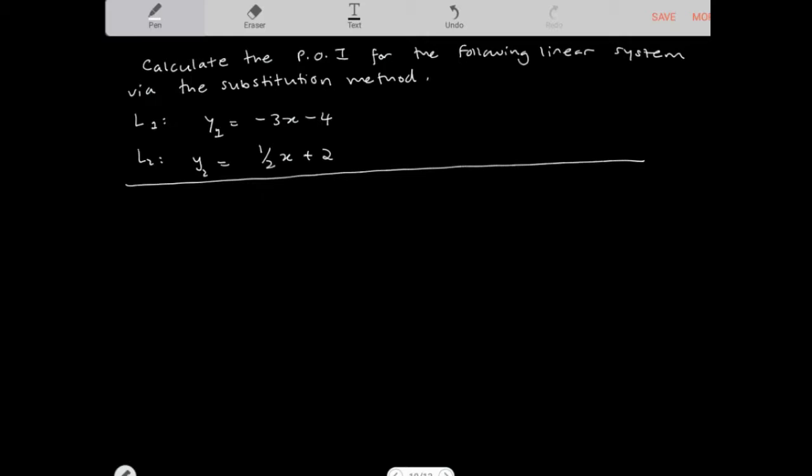Let's calculate the point of intersection for the following linear system via the substitution method. So here we have two lines in our system. We have line 1 and line 2.